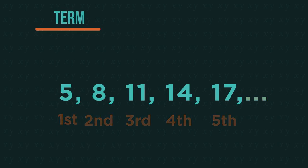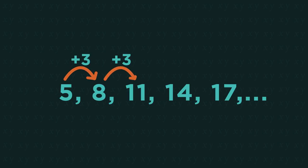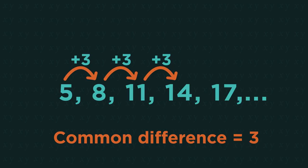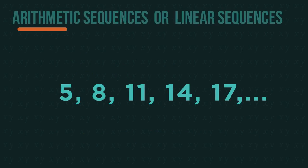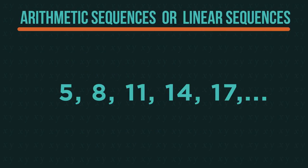This sequence is very easy to carry on. We can easily spot it's going up by three each time. Because it's plus three every time we say it has a common difference of three. Sequences that have a common difference, so the same difference every time, are called arithmetic sequences or linear sequences.